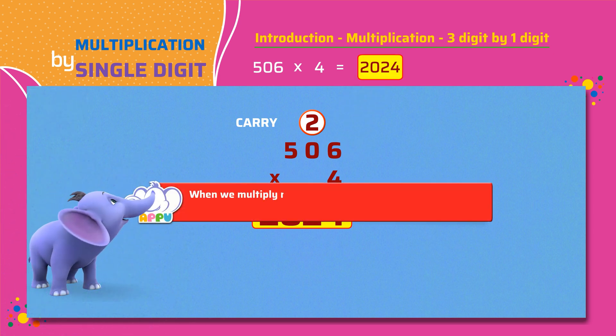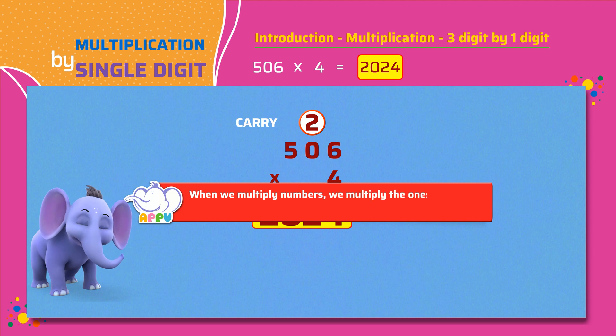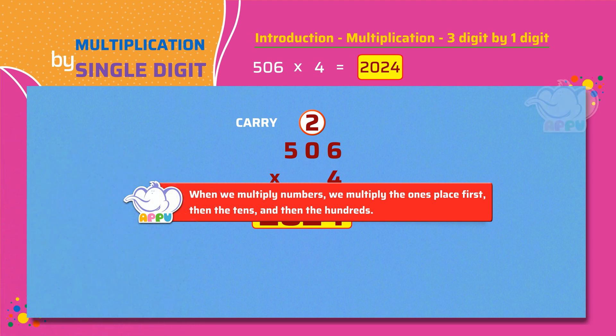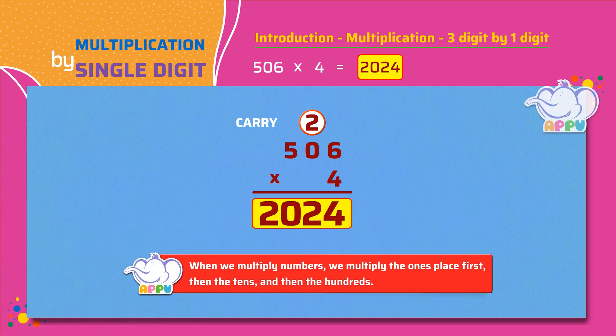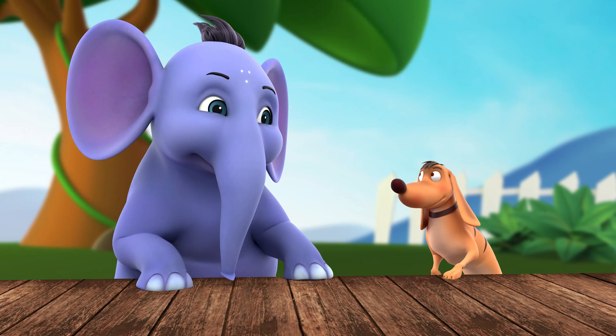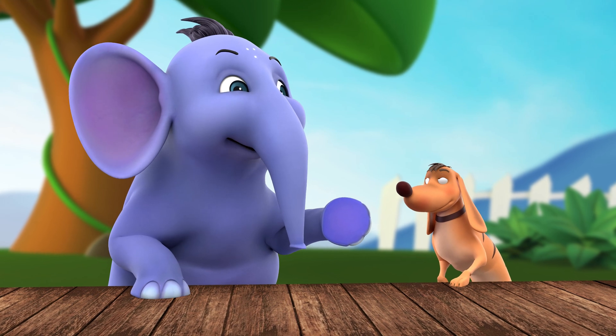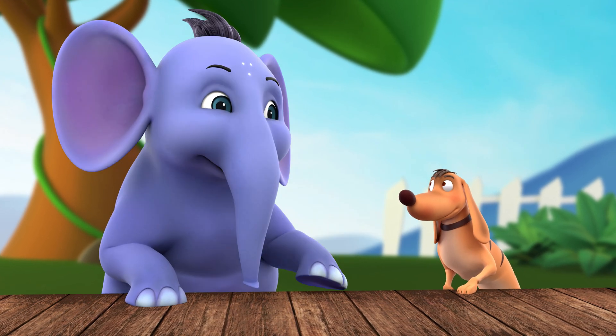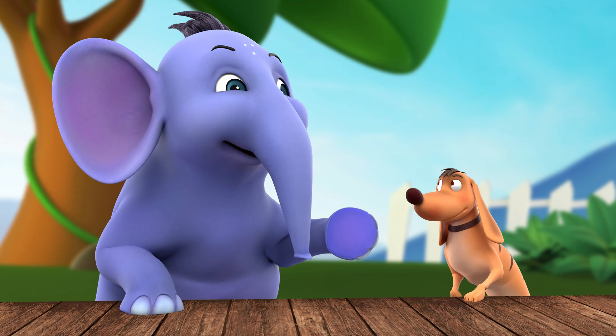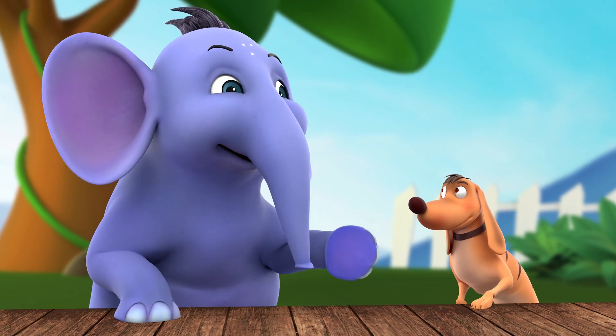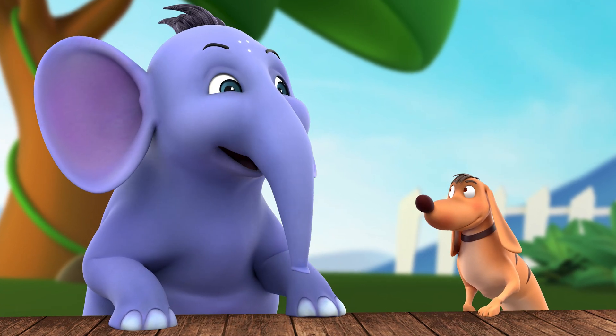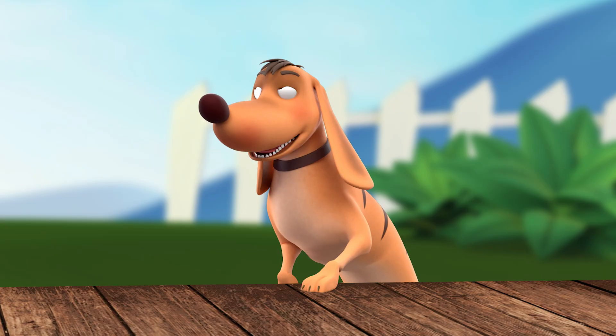When we multiply numbers we multiply the ones place first, then the tens and then the hundreds. So the important thing to remember when we multiply numbers is that we multiply the ones first, then the tens and then the hundreds. That's the rule to go! Can't wait to work on more exercises!